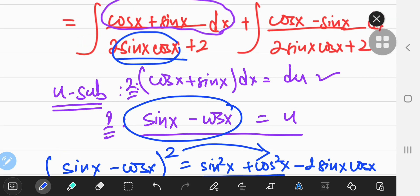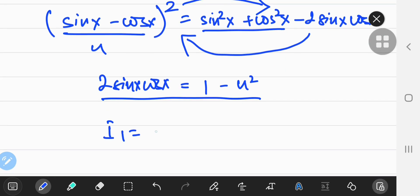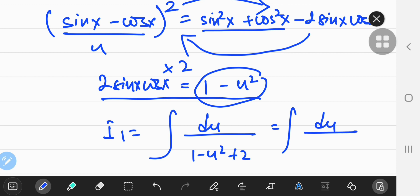So now I have the first integral. I'm going to call this i1. I have the first integral in terms of my u substitution now. i1 equals the integral du by this cross term, which is now 1 minus u squared, and you had a plus 2 with it, so plus 2.